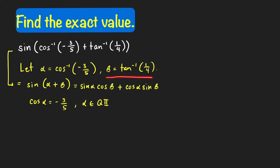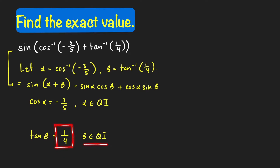For beta equal to tangent inverse of 1/4, this tells us that tangent(beta) = 1/4 and that beta is in quadrant 1. Recall that the range of tangent inverse is between negative pi over 2 and pi over 2, and since tangent is positive here, the angle terminates in quadrant 1.